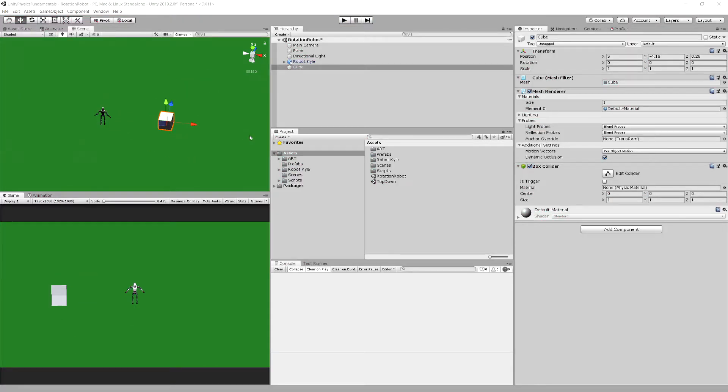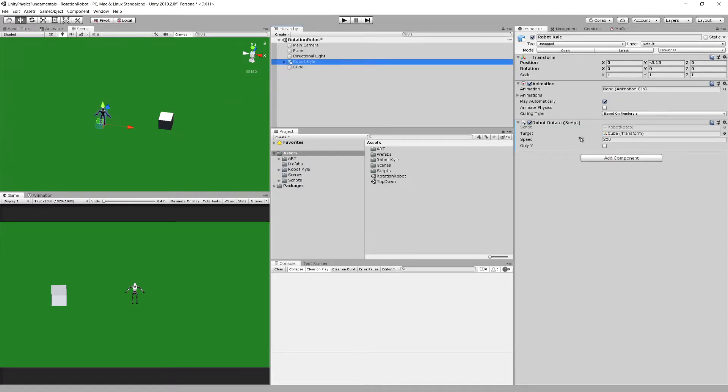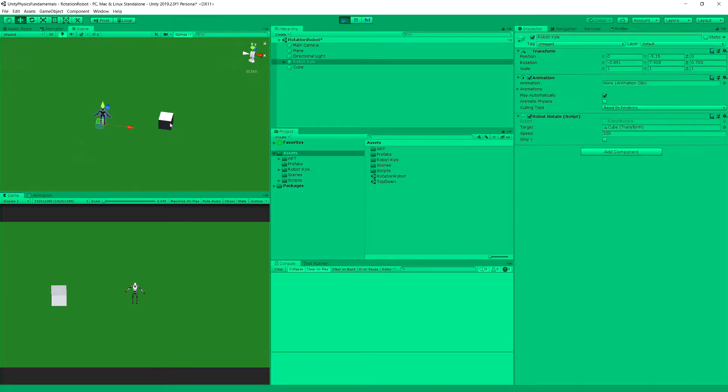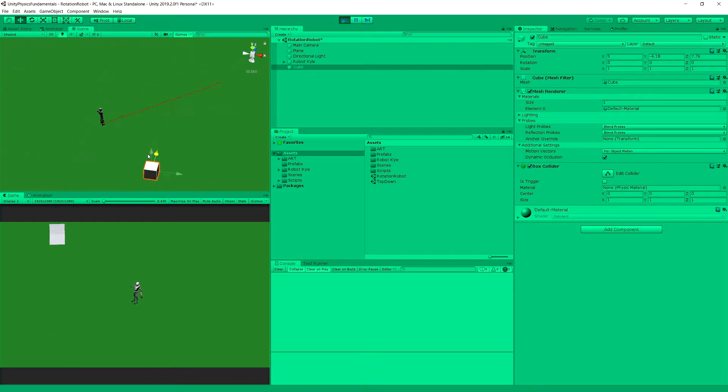Now, the previous demo was using quaternion.slerp and the rotation was quite smooth. Now we are using RotateTowards and we increase the speed up to 200.